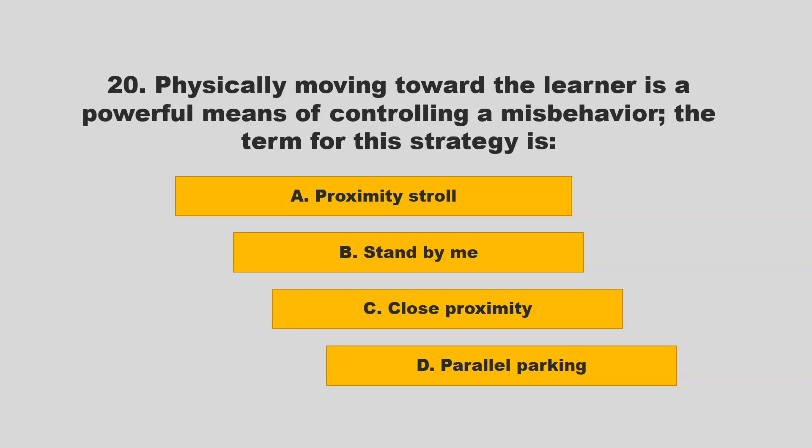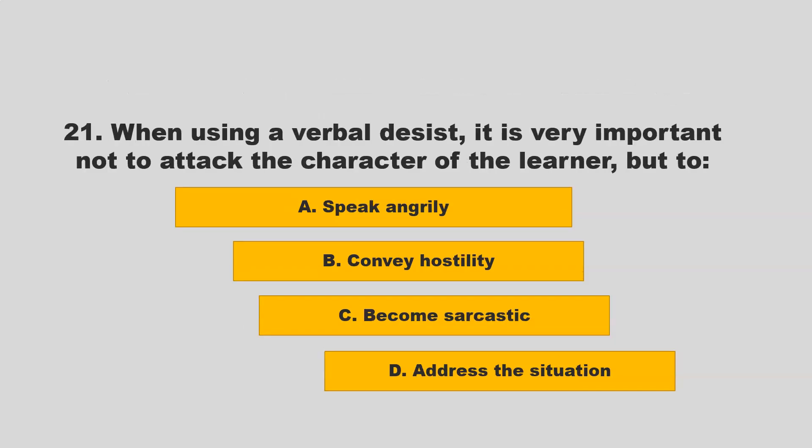Physically moving toward the learner is a powerful means of controlling misbehavior. The term for this strategy is close proximity. Other options included proximity stroll, stand by me, and parallel parking. If you chose C, close proximity, you are correct.